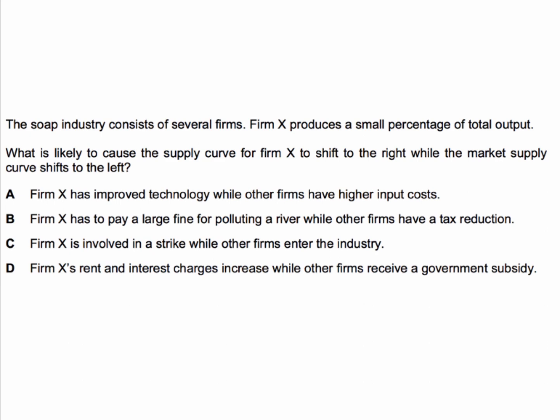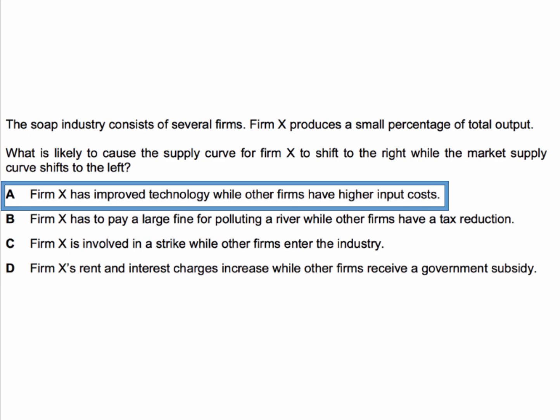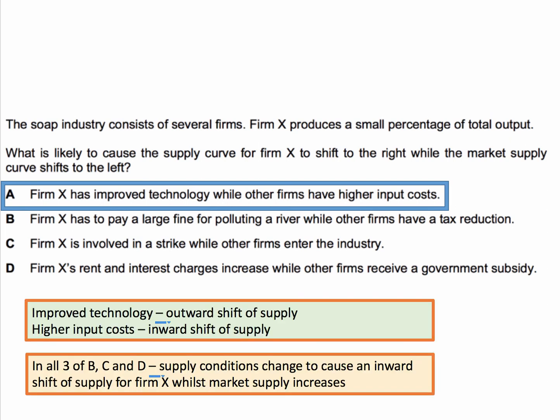The correct answer for this question is A: Firm X has improved technology, while other firms have higher input costs. Improved technology causes an outward shift of supply for Firm X, while higher input costs cause an inward shift of supply for the other firms.